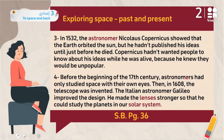Before the beginning of the 17th century, astronomers had only studied space with their own eyes. Then in 1608 the telescope was invented. The Italian astronomer Galileo improved the design — he made the lenses stronger so that he could study the planets in our solar system.